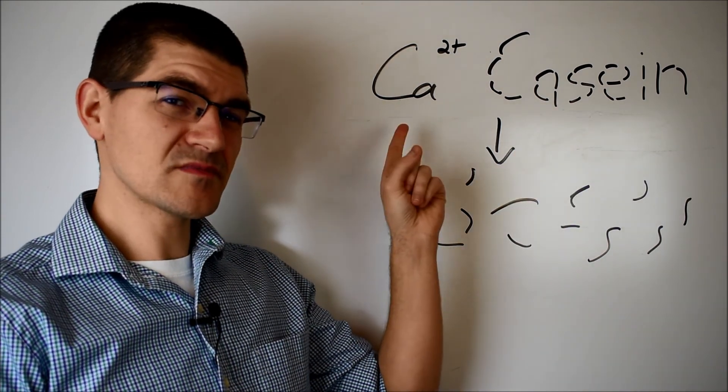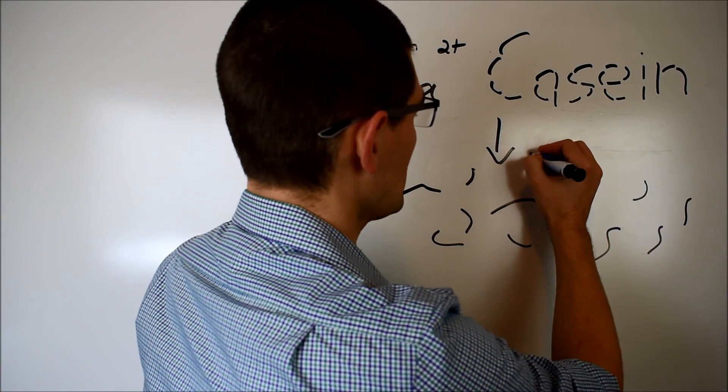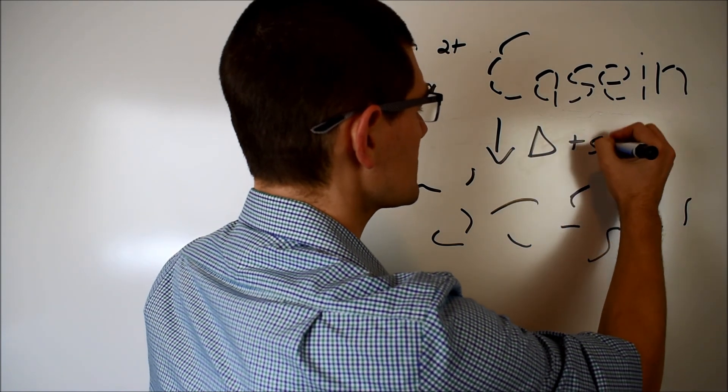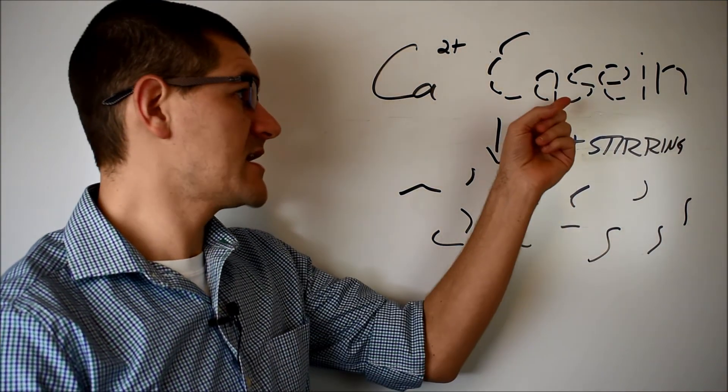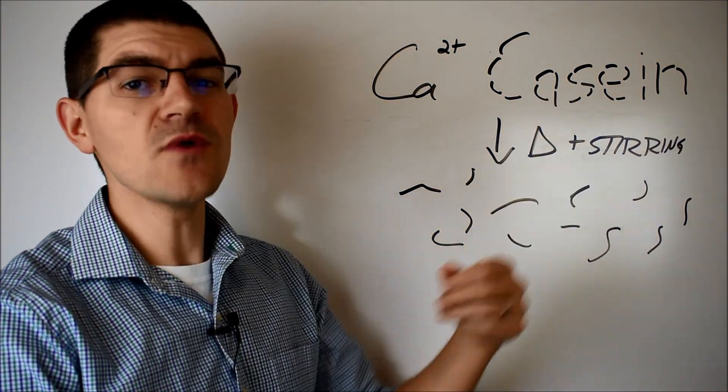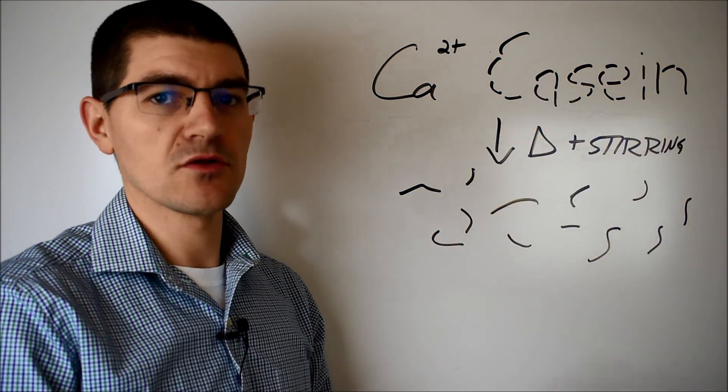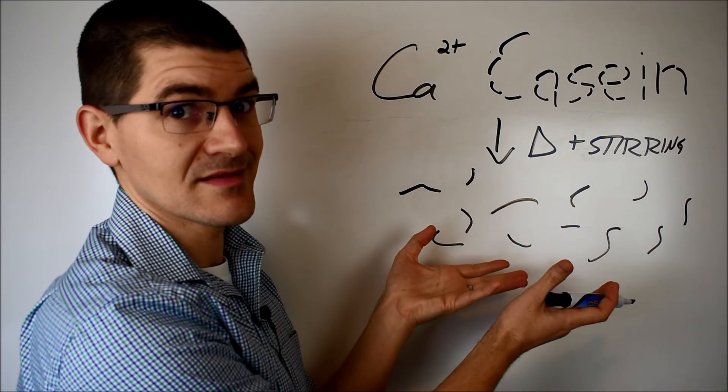Combining that calcium sequestration by the emulsifying salt with something like heat and stirring during a process of, oh, I don't know, something like pasteurization, and you break down that greater casein structure into hydrated and dispersed smaller protein pieces. Like these.